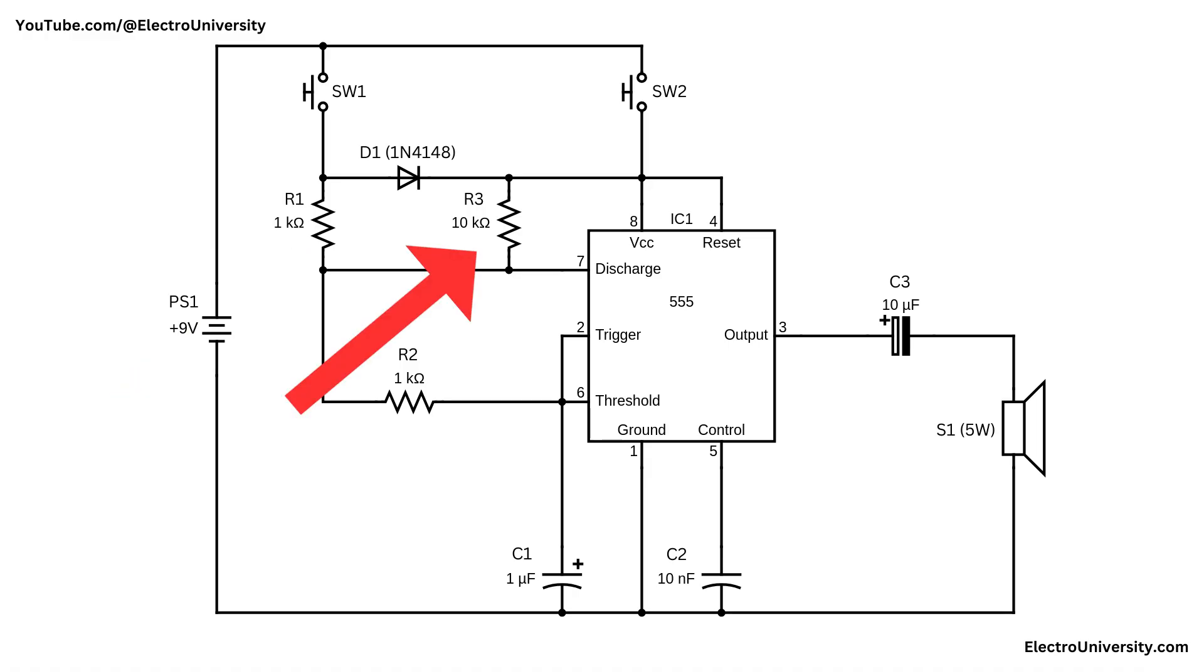Resistors R1 and R3 and the 1N4148 fast switching diode determine the charging path and timing behavior. When switch one is pressed, current flows through R1 and D1, affecting how the capacitor charges and producing a unique pulse length and waveform at the output.